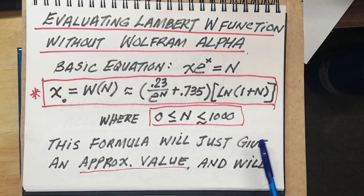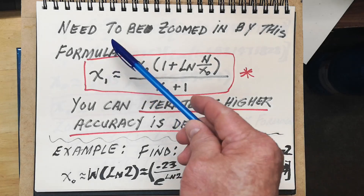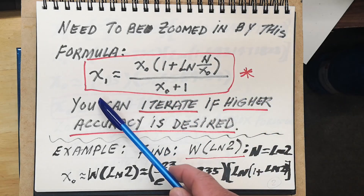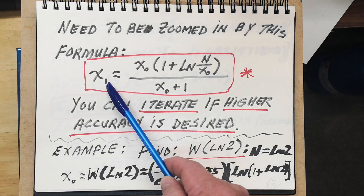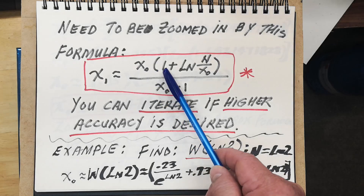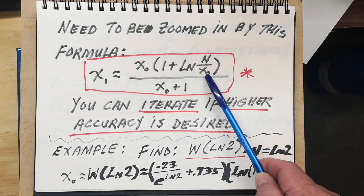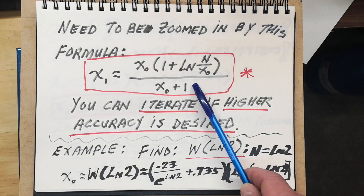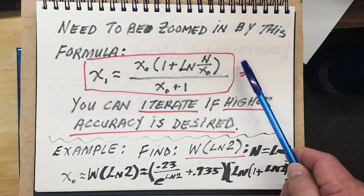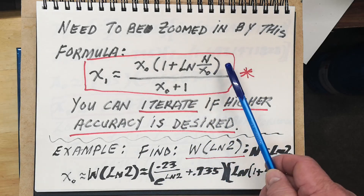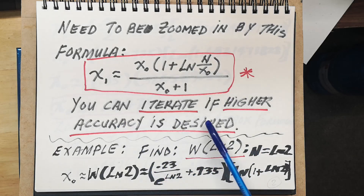This formula gives an approximate value and will need to be refined using this approximation formula, where x₁ is approximately equal to x₀ times (1 plus ln(n) divided by x₀) divided by (x₀ + 1). This is for refining the initial answer, and you can iterate further if higher accuracy is needed.